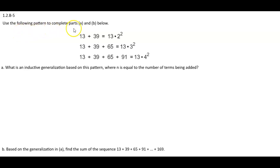Use the following pattern to complete parts A and B below. We have 13 plus 39 equals 13 times 2 squared. 13 plus 39 plus 65 equals 13 times 3 squared. 13 plus 39 plus 65 plus 91 equals 13 times 4 squared.